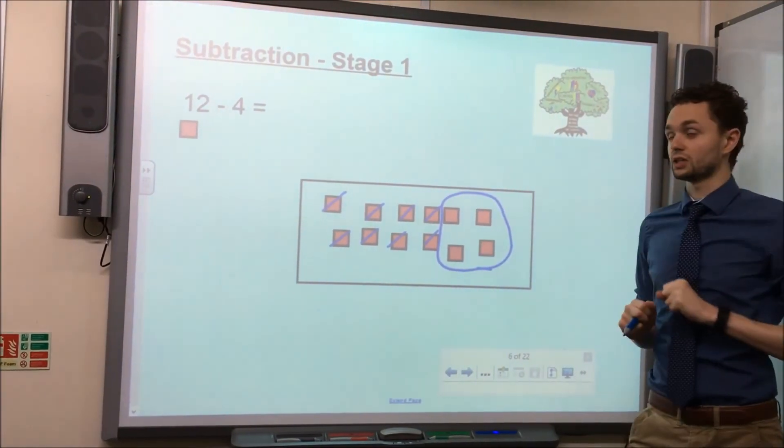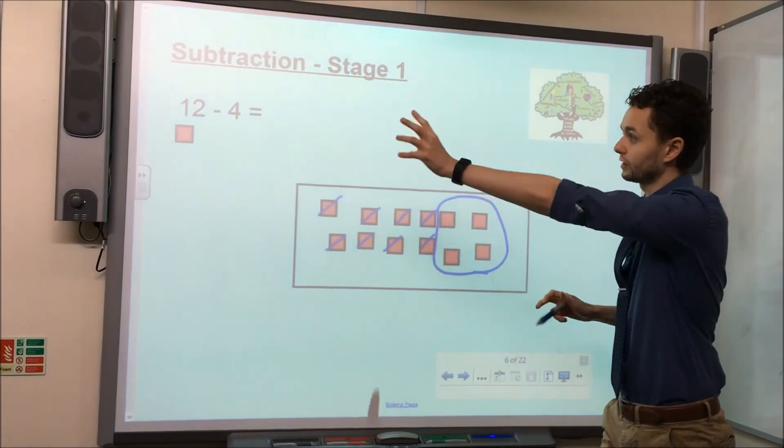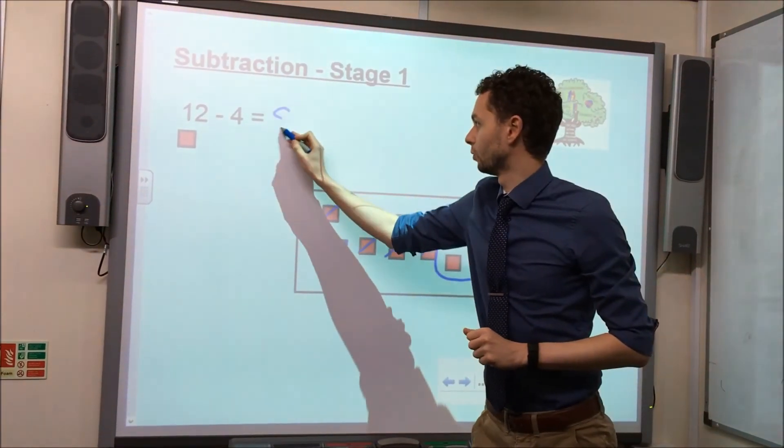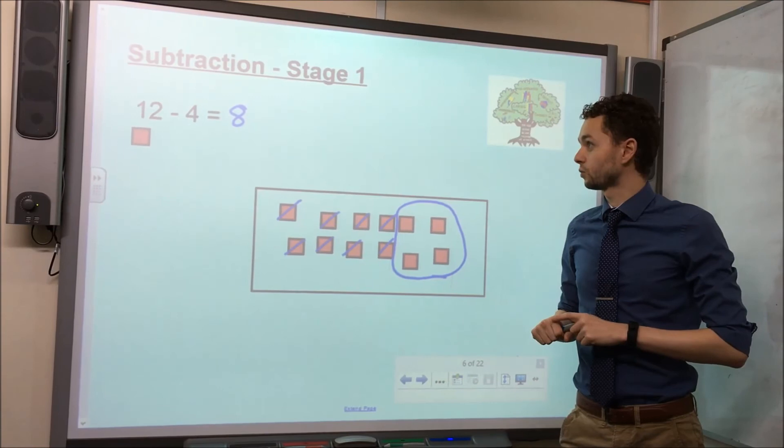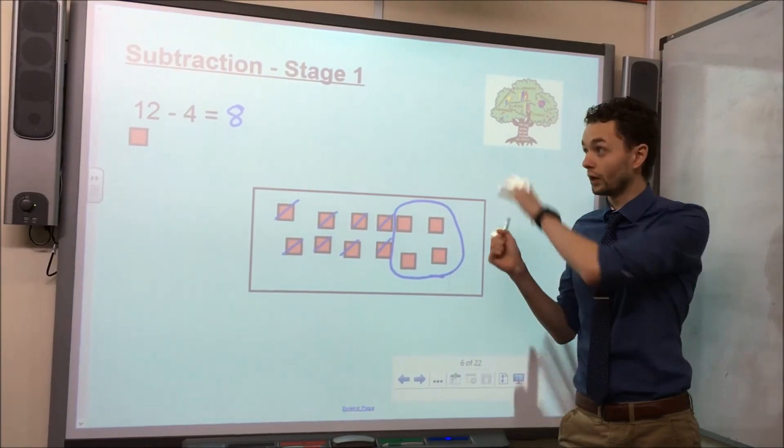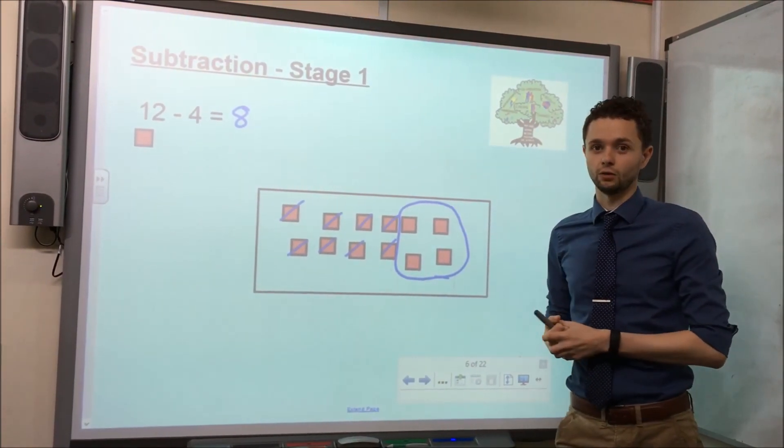So now I've taken away my 4 counters, I've got 8 counters left, which tells me 12 take away 4 equals 8. That's subtraction stage 1 and we hope children to be secure in this approach by the end of year 1.